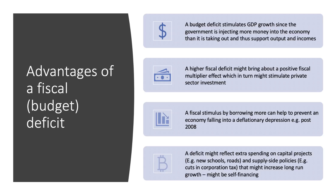The third point is that a fiscal stimulus — borrowing more money — can be useful, indeed some economists believe essential, to help prevent an economy falling into a deflationary depression. There was of course the big risk of this following the credit crunch, subprime crisis, and the global financial crisis which started in 2007 through to 2010.